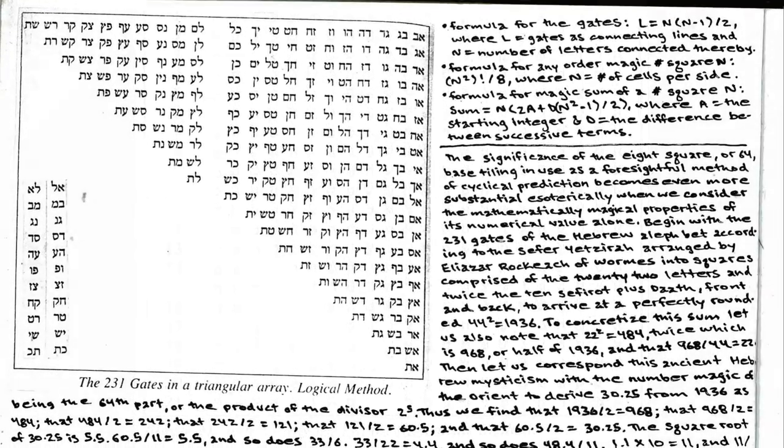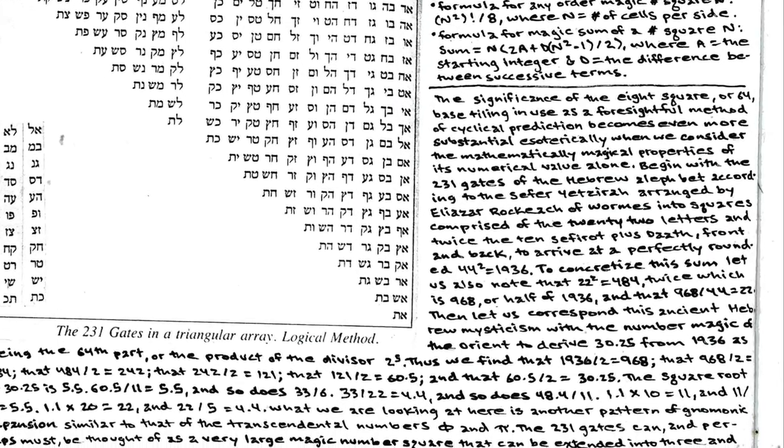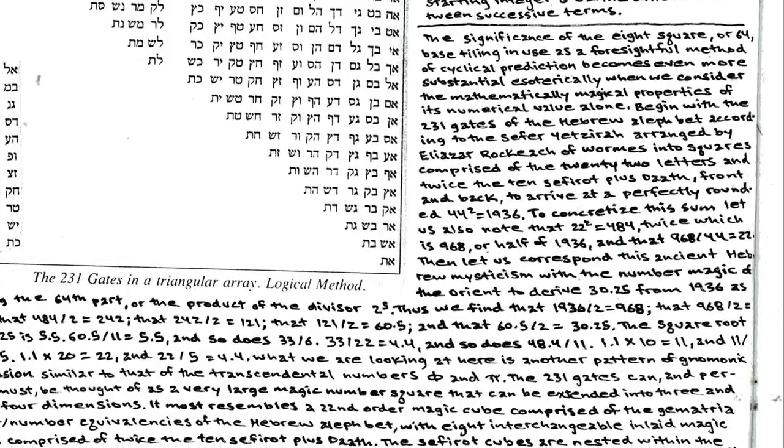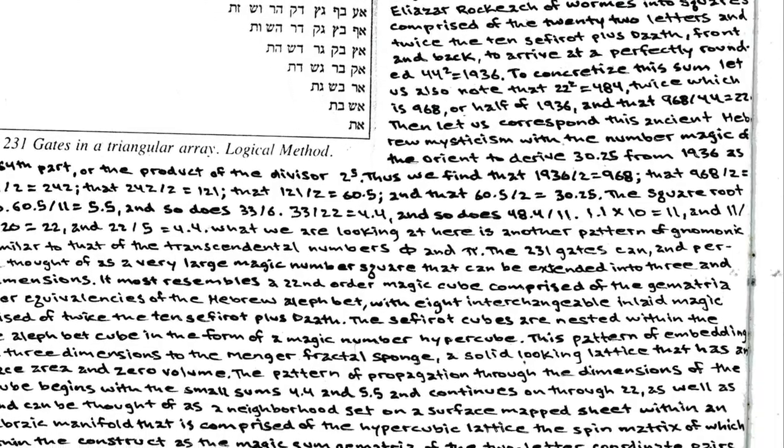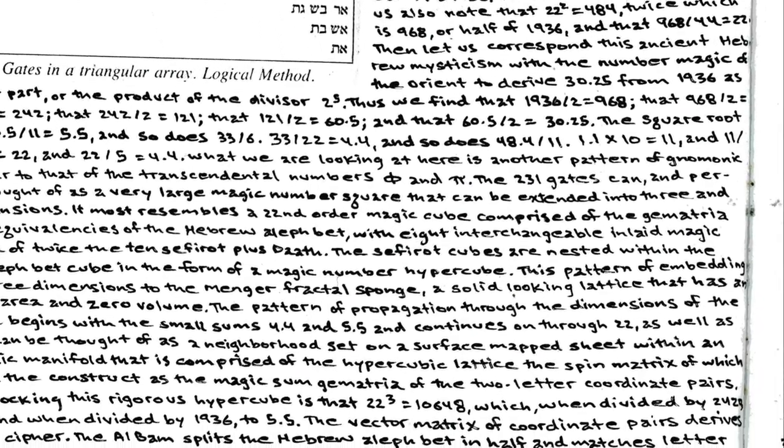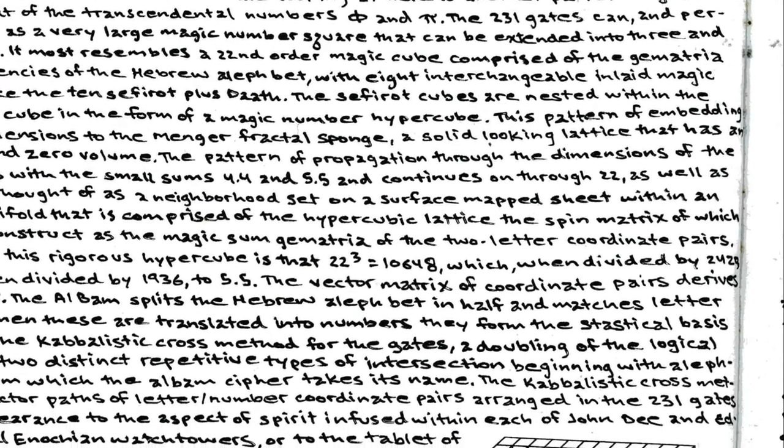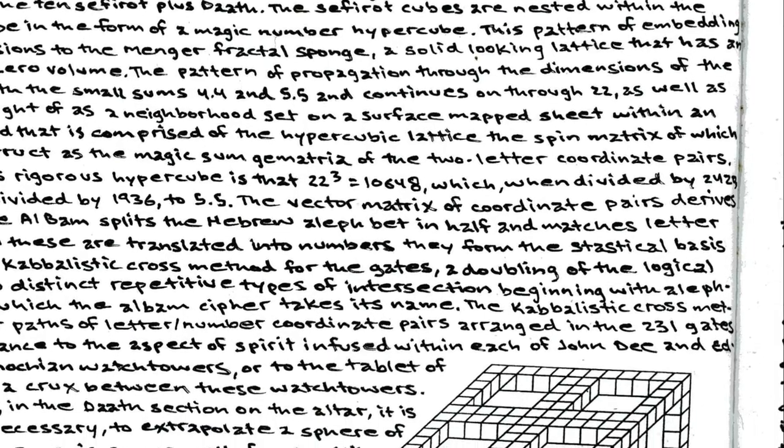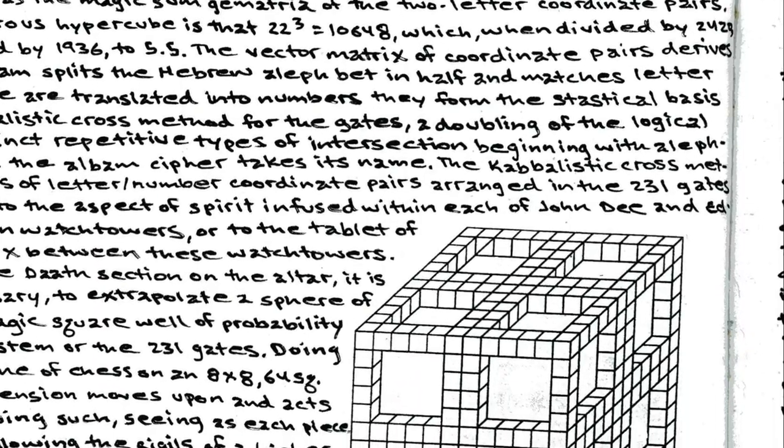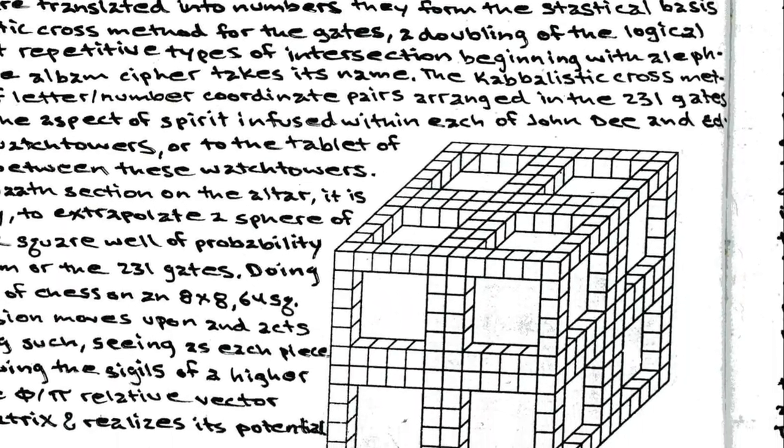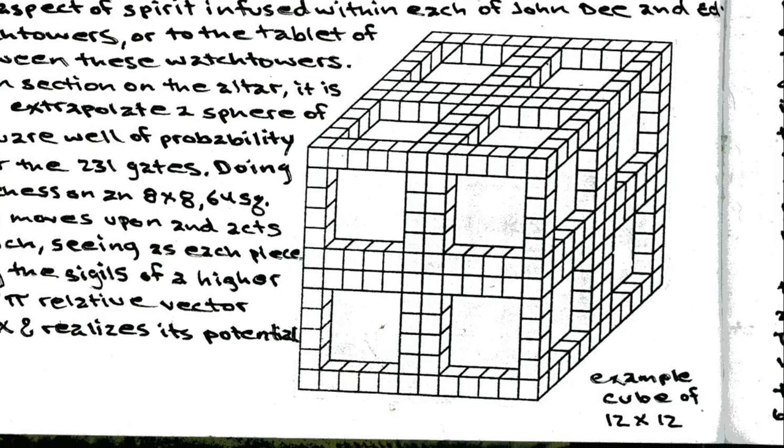It is known for example that Rabbi Eliezer of Worms, 1176-1238 AD, worked on the 231 gates using the Kabbalistic method to produce a series of 22 tables, each containing 231 letters, and that his method was replicated and modified in the work Emek HaMelekh published in 1563. These tables constitute the earliest now known of examples of a magic gematria cube. However, they are certainly neither the last nor most complex of their kind.